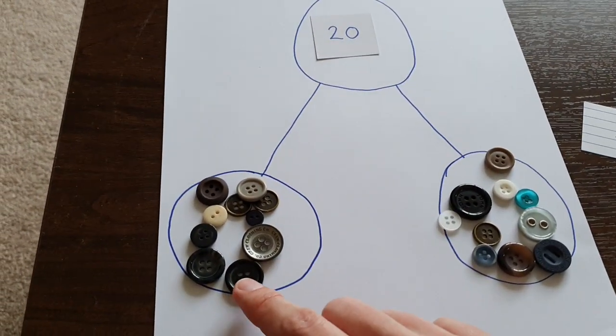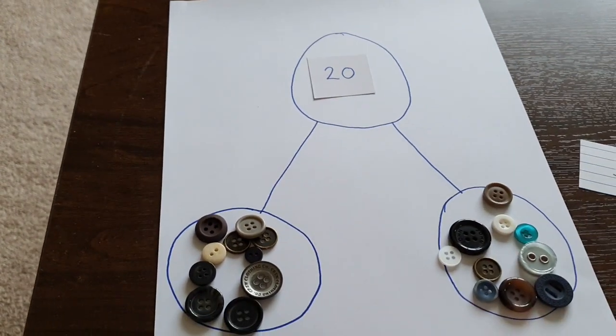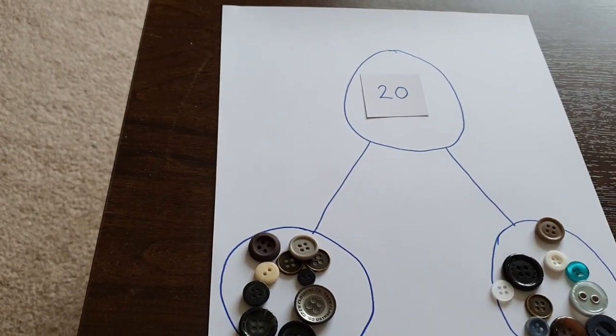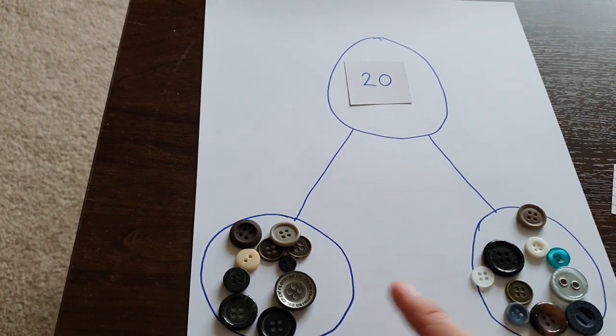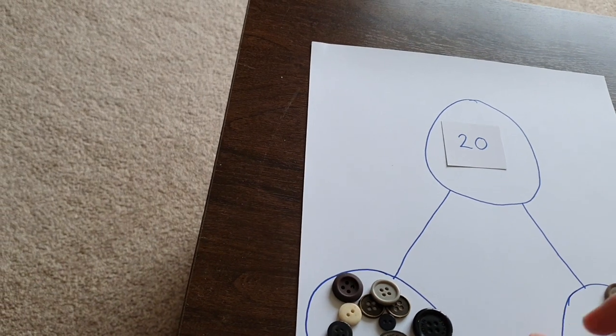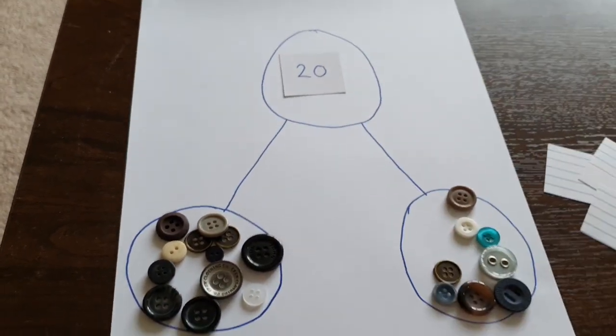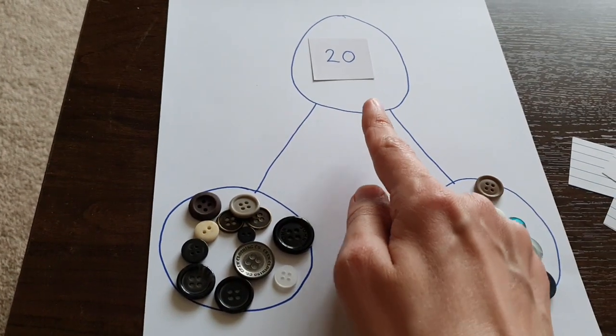So we can say that 10 add 10 makes 20. You can say that 20 take away 10 is 10. And if we have a different number here, so we can explore all the different pairs that make 20, or that make your number that you get here.